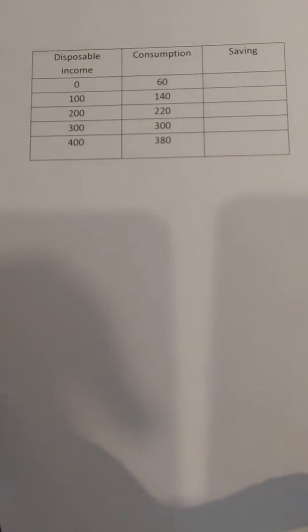For this video, we're going to figure out what saving is if we know what disposable income and consumption are. Disposable income is the money we have left over after taxes. So if I earn $400 this week and the government takes $100 in taxes, my disposable income is $300.